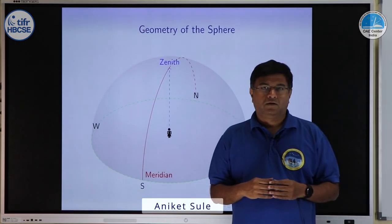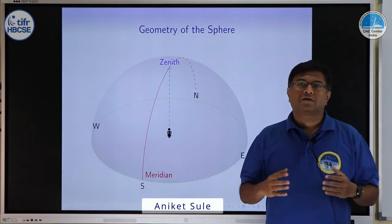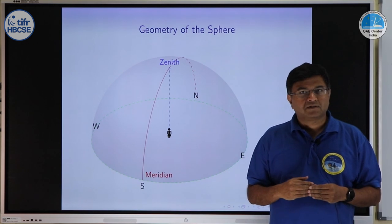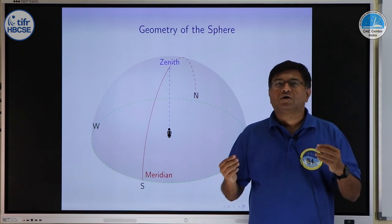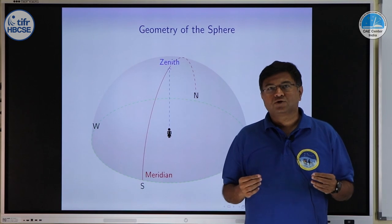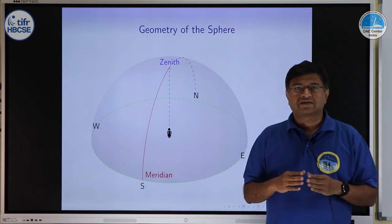We have already seen what zenith means and what meridian means. Now, let us go to actual coordinate systems which we use to point stars in the sky.